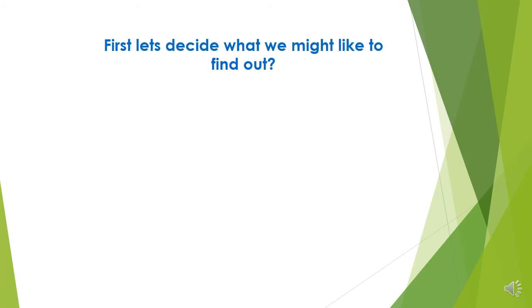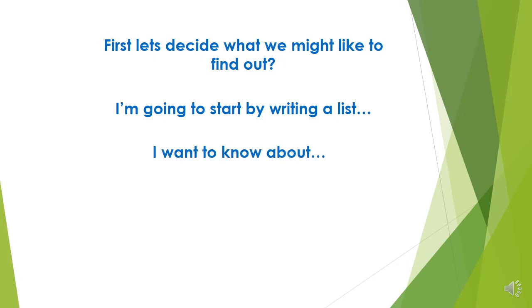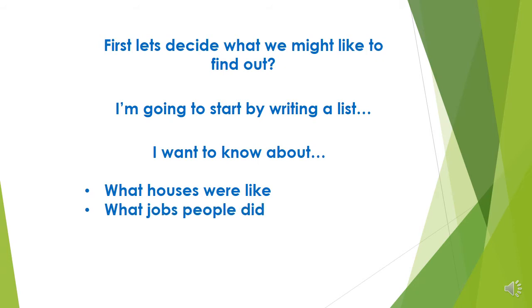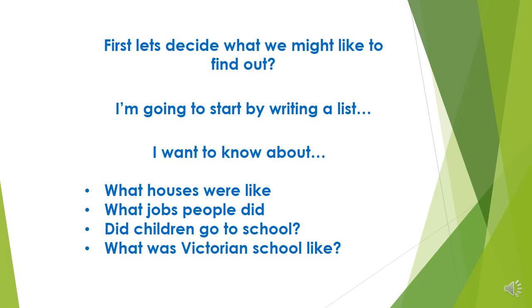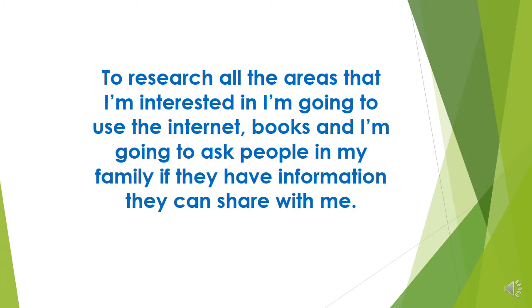We can do some research. First of all, I think we need to decide what we might like to find out about, so I'm going to start by writing a list. I want to know what houses were like, what jobs people did, and what Victorian school was like. The things you might pick might be different — you can research whatever you would like to find out about Victorian times.